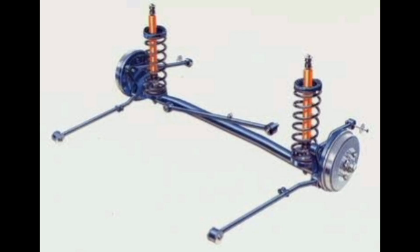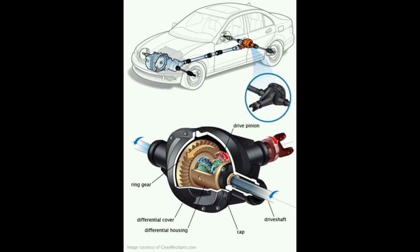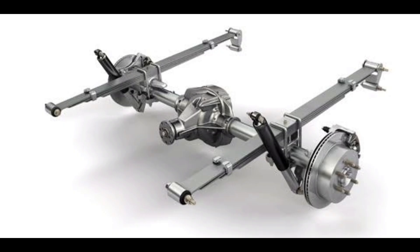One of the key functions of the transmission system is to redirect motion by 90 degrees, aligning the axis of the propeller shaft with that of the live axle. The differential achieves this through a wheel and pinion arrangement. Additionally, it regulates the speed difference between the inner and outer wheels during turns.